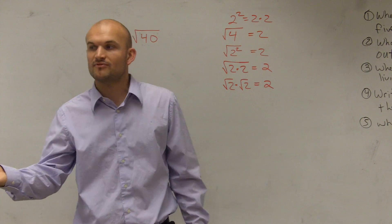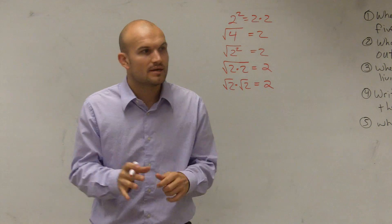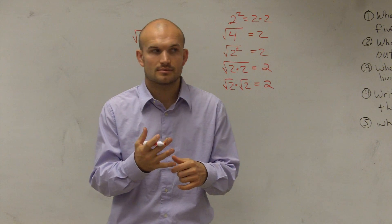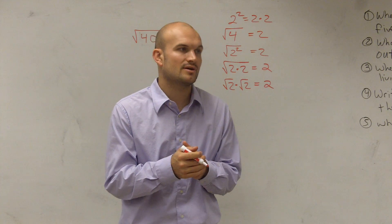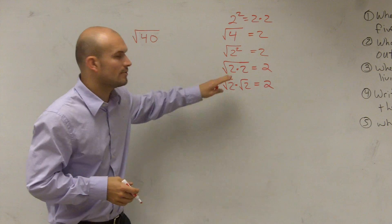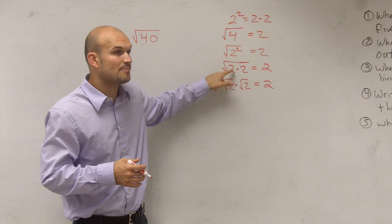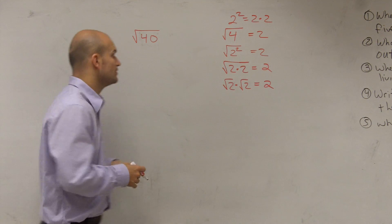So what we're going to do when we're simplifying, we're going to want to factor the numbers. We're going to identify numbers that we can make a pair of, because when we have a pair, we can take them out of a square root.